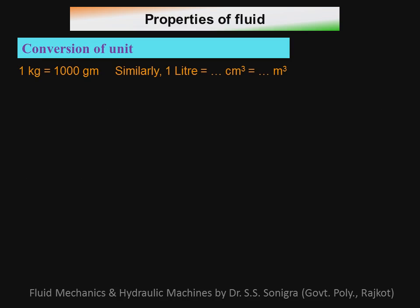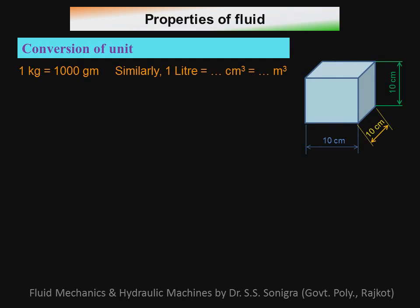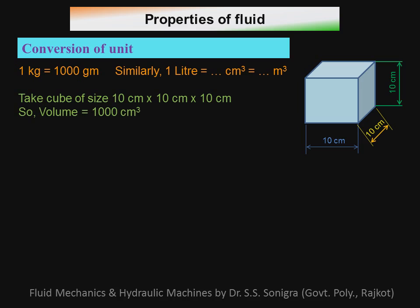First, one kilogram is equal to one thousand grams — that we know, it's very easy. Similarly, one liter is equal to how many centimeter cubed or meter cubed? To understand this, consider a cube of size 10 cm × 10 cm × 10 cm — height, width, and length all are 10 centimeters. So its volume is equal to one thousand centimeter cubed, since volume equals L × B × H.